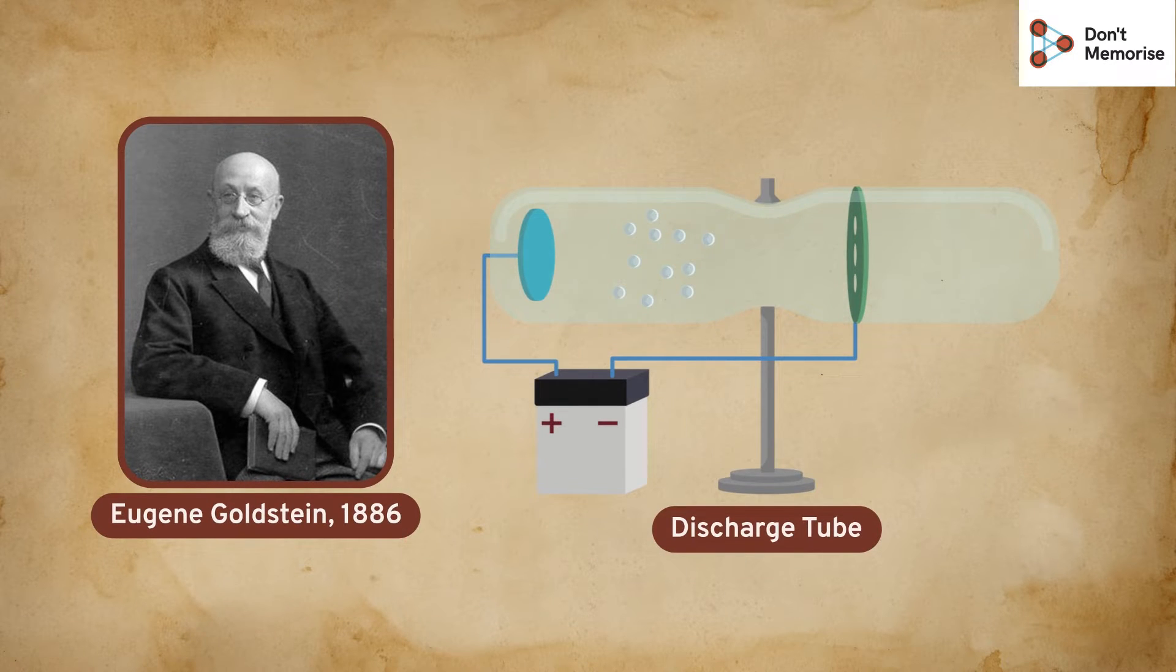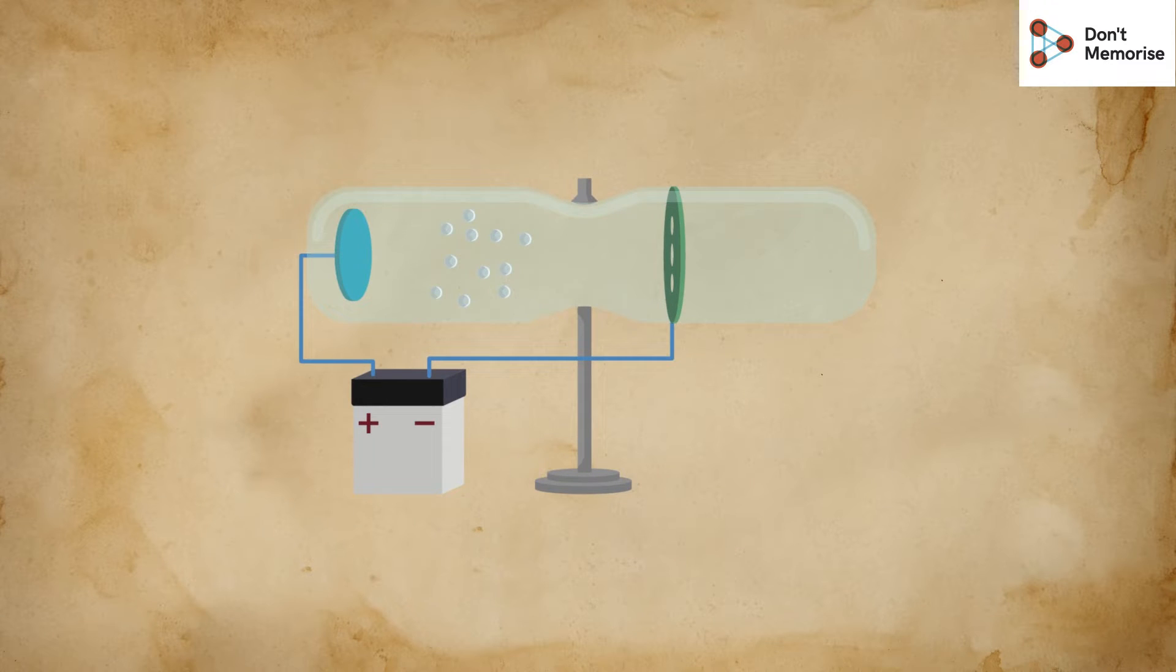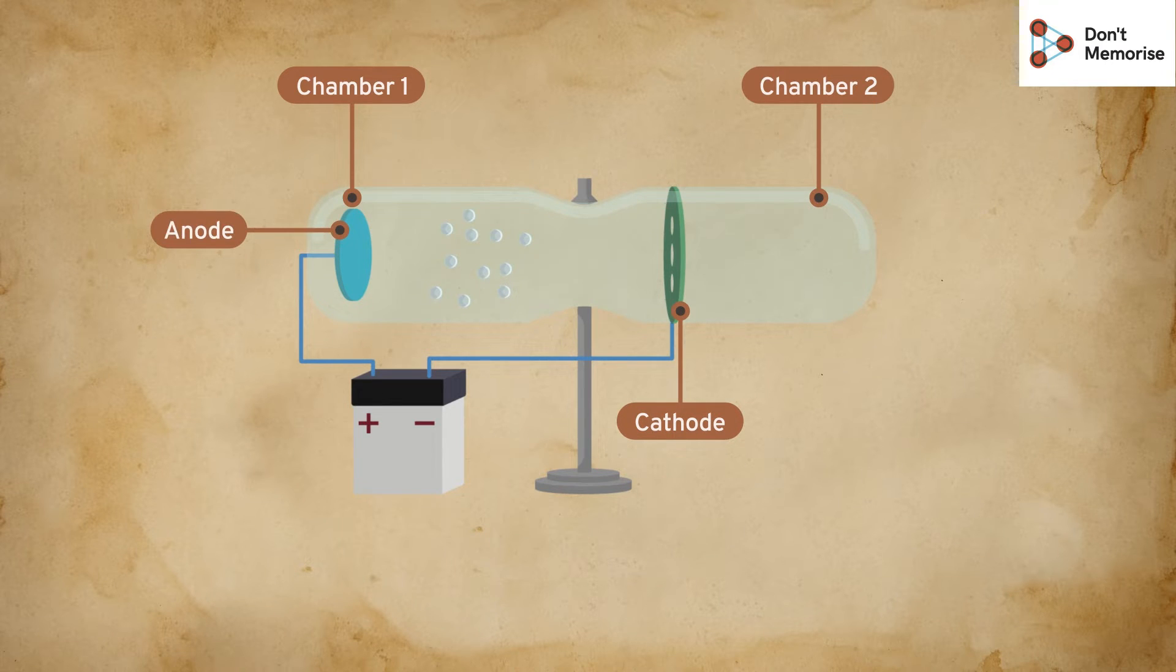He divided the tube into two chambers with a perforated metal plate. This plate acted as a cathode. An anode plate was placed at the other end of the first chamber. A small amount of residual gas was present between the anode and the cathode.